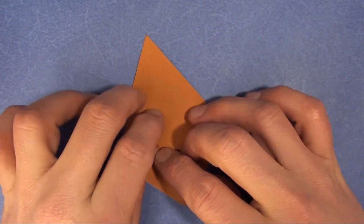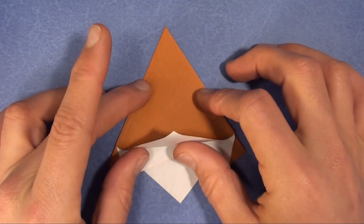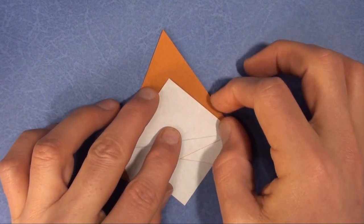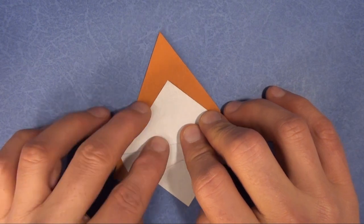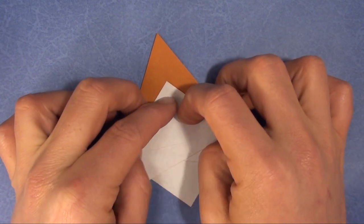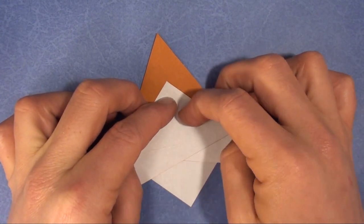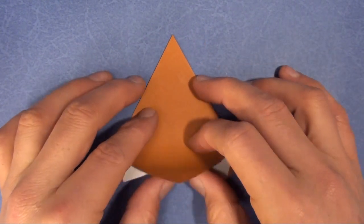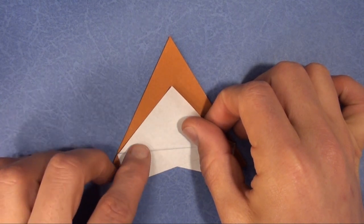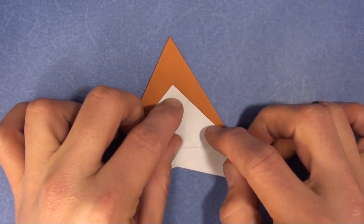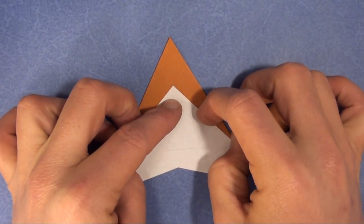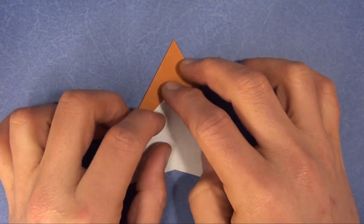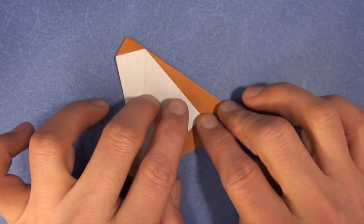Now rotate it, and we'll take this fold up. Now we fold up there, and we're going to do the same thing on the back side. Valley fold this flat. And rotate it.